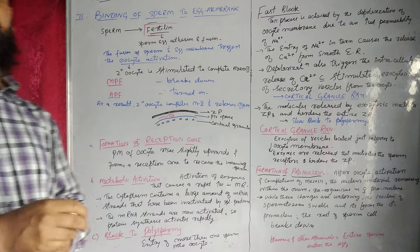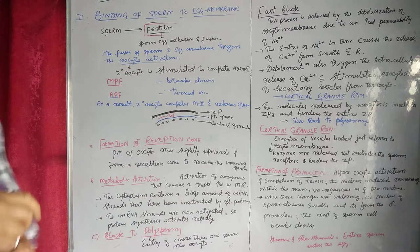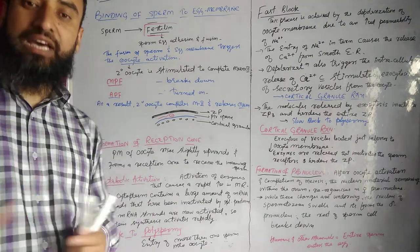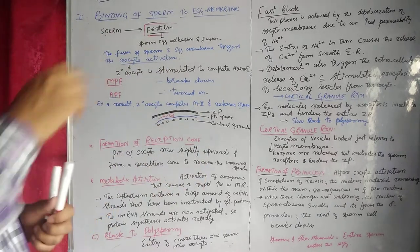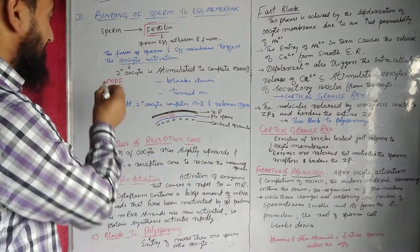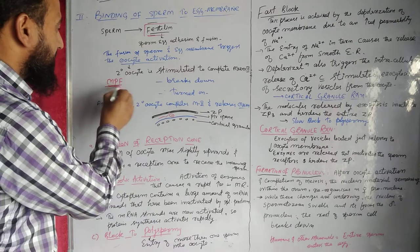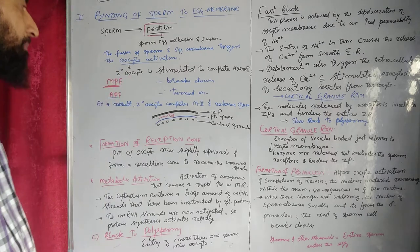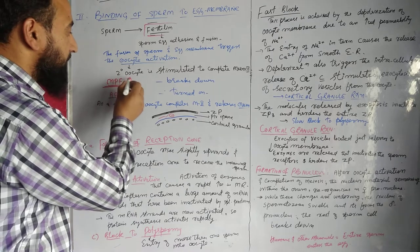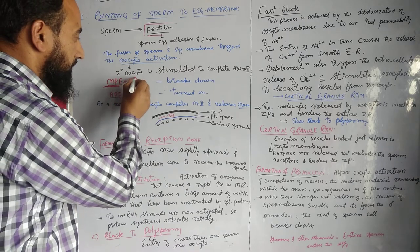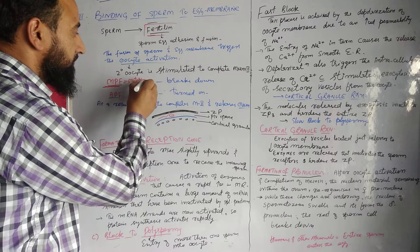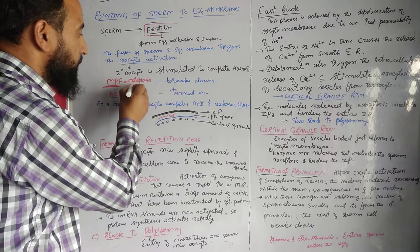How was meiosis II arrested at metaphase II? There is a protein called MPF — metaphase promoting factor. It is because of MPF that meiosis was arrested at metaphase.